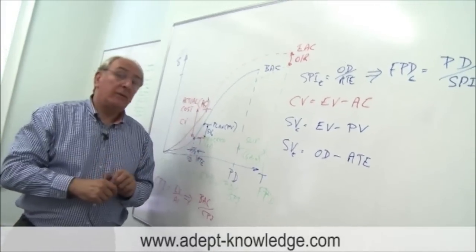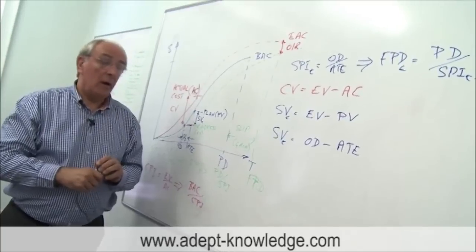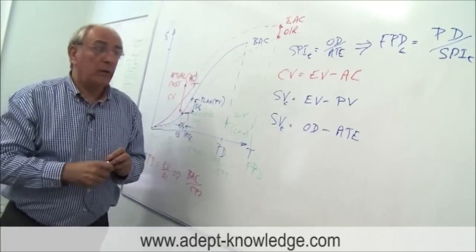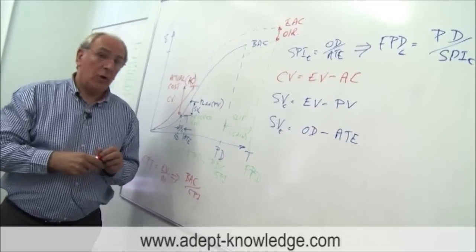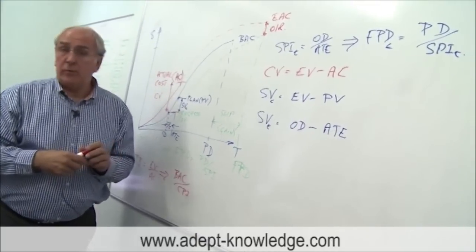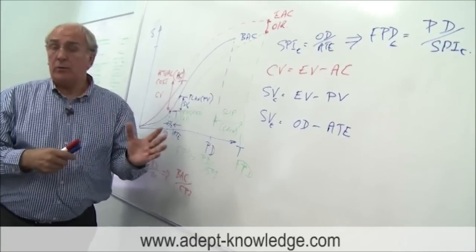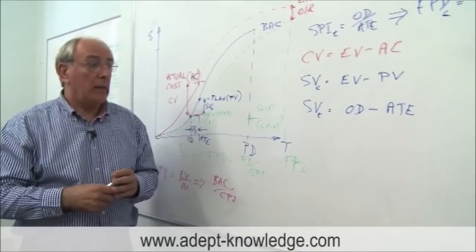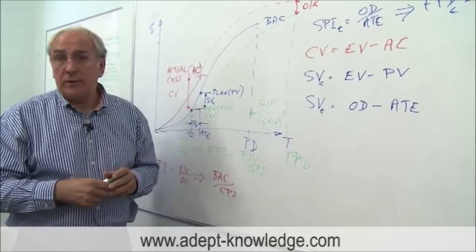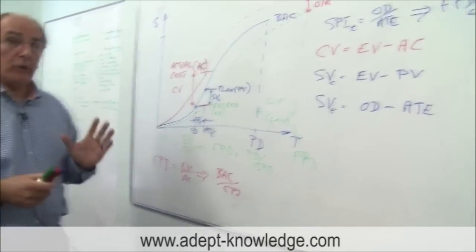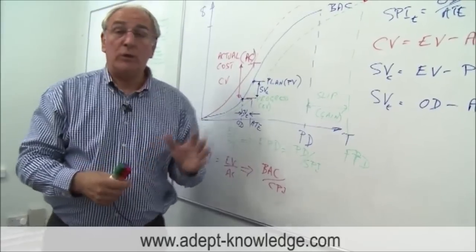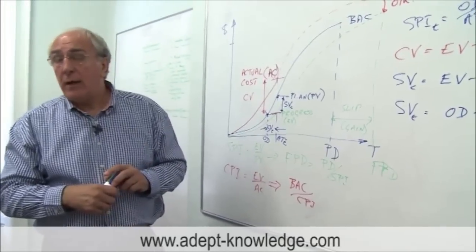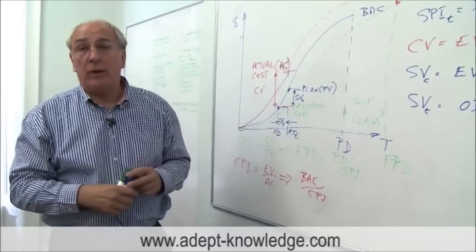And the third pieces of intelligence that come out of this are the variances. And if you recall, the cost variance was the difference between the earned value and the actual cost. The schedule variance was the difference between the progress that we made, the earned value and the planned value. That was the earned value minus the planned value. And our schedule variance on time was our original duration. You'll recall that that original duration was when we should have achieved this earned value and that's minus the actual time. And that's going to tell us how late we're running on this project.